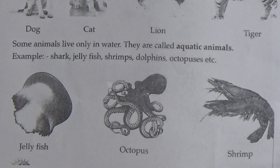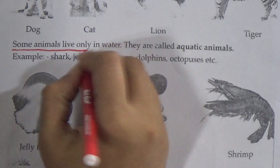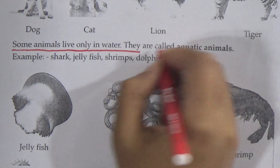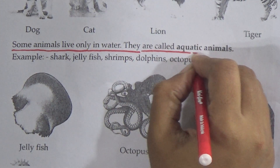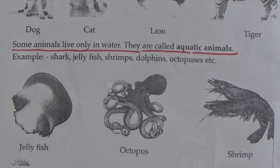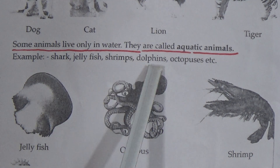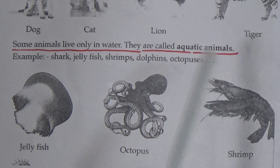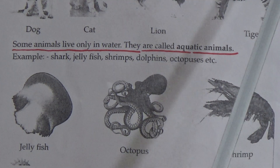Some animals live only in water — they are called aquatic animals. This line is also very important for you. Animals that live only in water are called aquatic animals. Examples are shark, jellyfish, shrimp, dolphin, octopus, etc. This is the picture of jellyfish, octopus, and shrimp. Come to the next page.